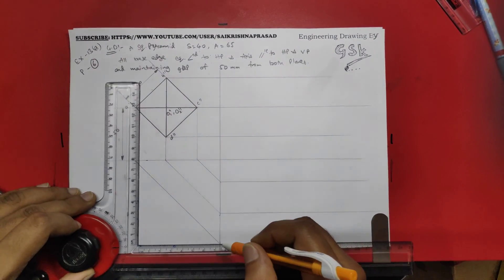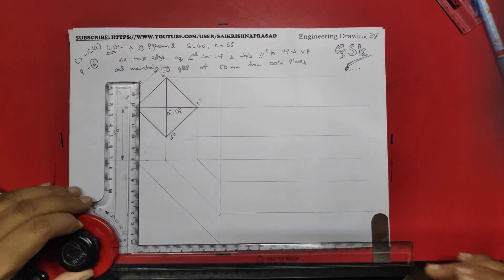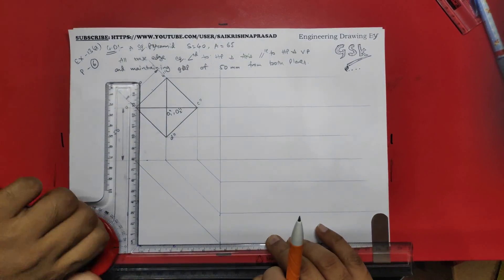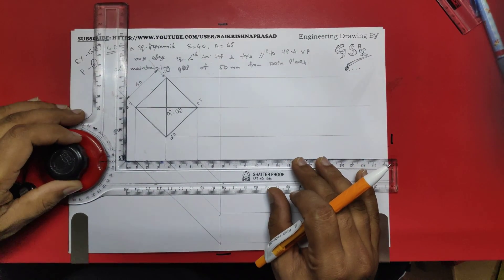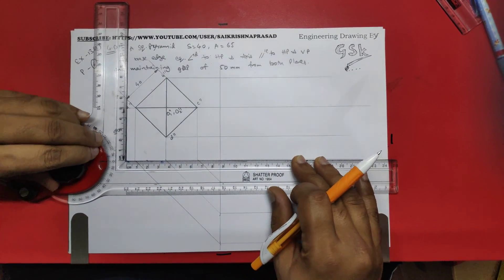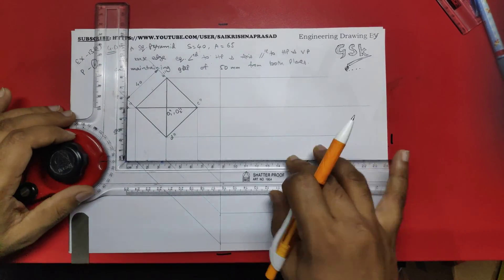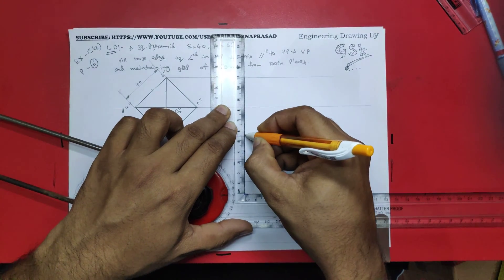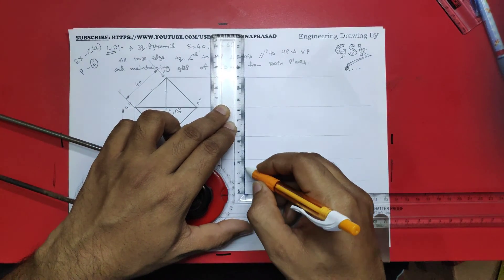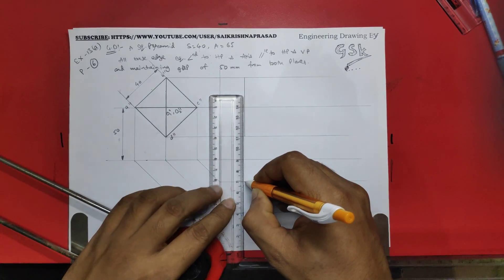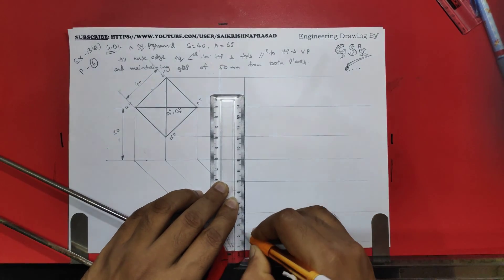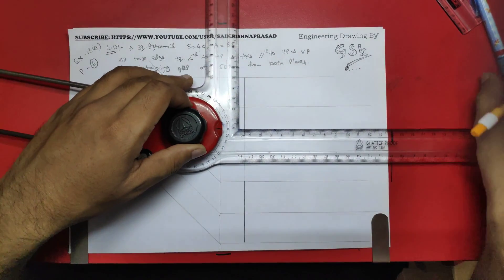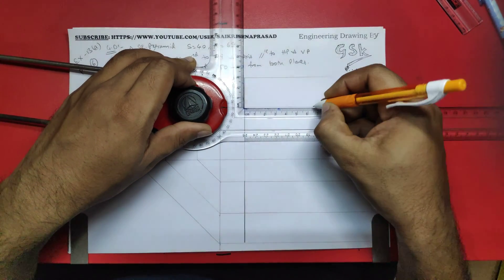I am just getting the projectors from side views to the top. Then I will start with the figure over here, the top view, the front view. Now I am going for the front view over here. This line is the base and the length of the axis would be 65.